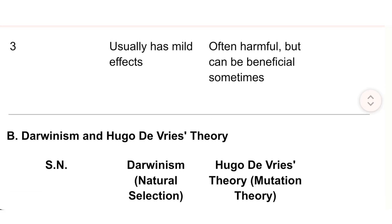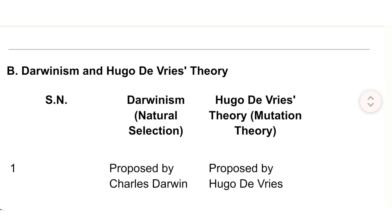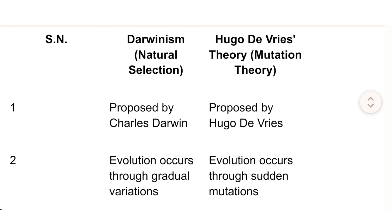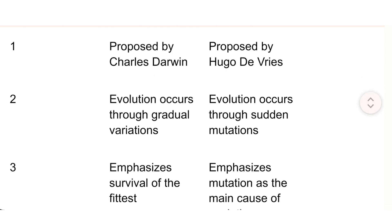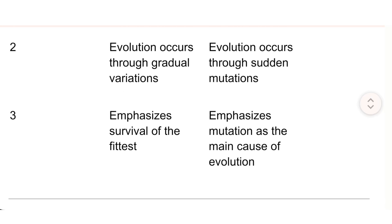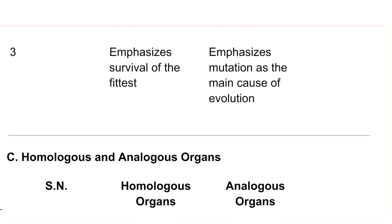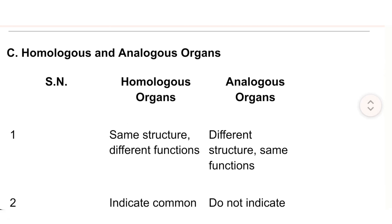B) Darwinism vs Hugo de Vries' theory: 1) Darwinism was proposed by Charles Darwin; Hugo de Vries' mutation theory was proposed by Hugo de Vries. 2) Evolution occurs through gradual variations vs through sudden mutations. 3) Darwinism emphasizes survival of the fittest; Hugo de Vries' theory emphasizes mutation as the main cause of evolution.